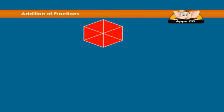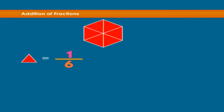Let's take a hexagon as our example. Each piece is one-sixth of the hexagon. So, four pieces will be four-sixths of the hexagon.